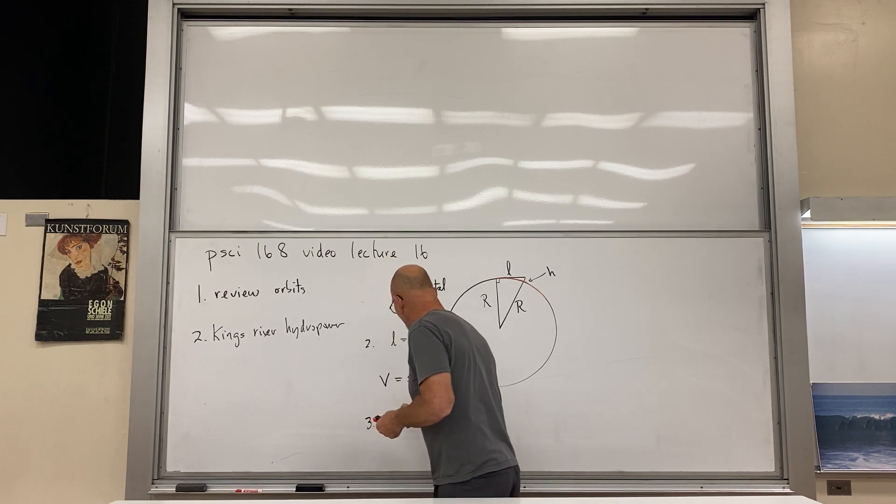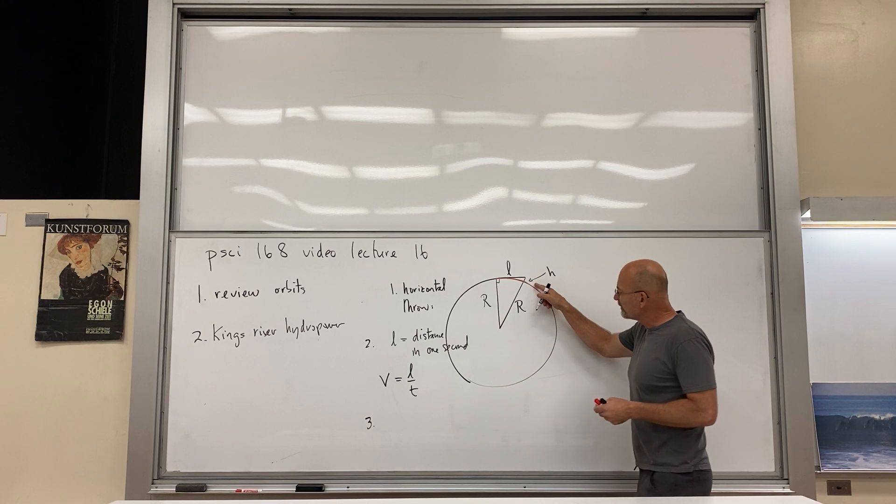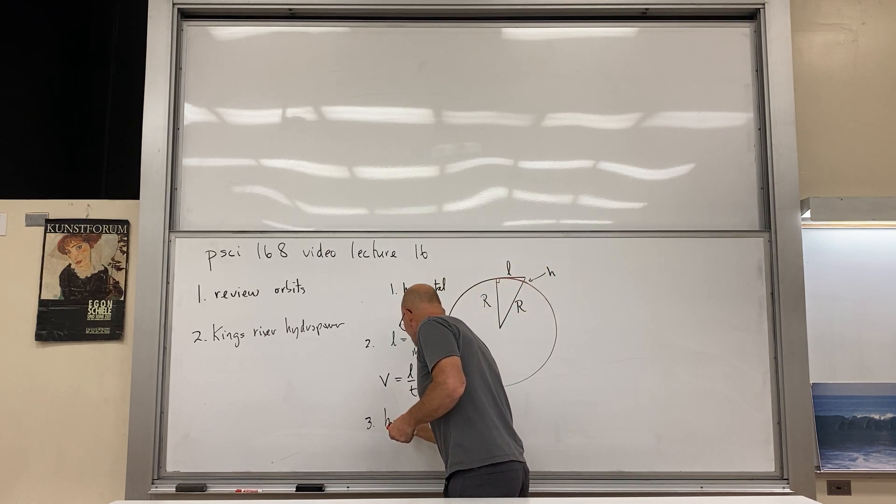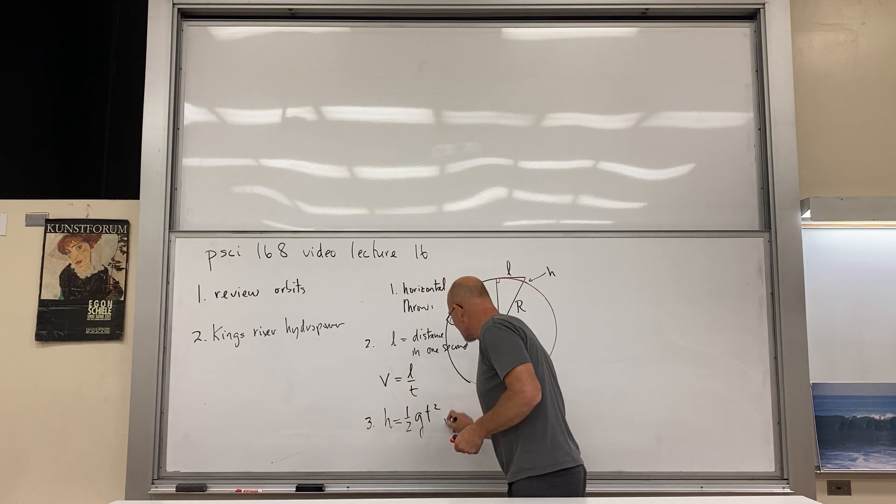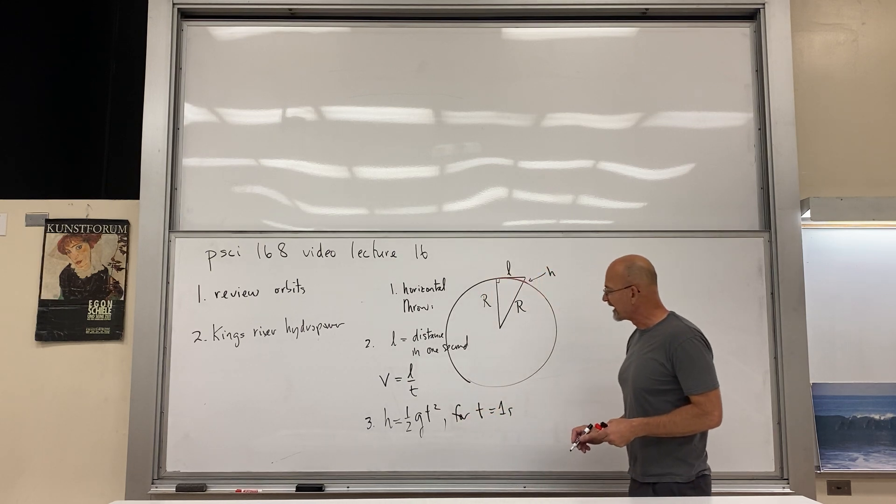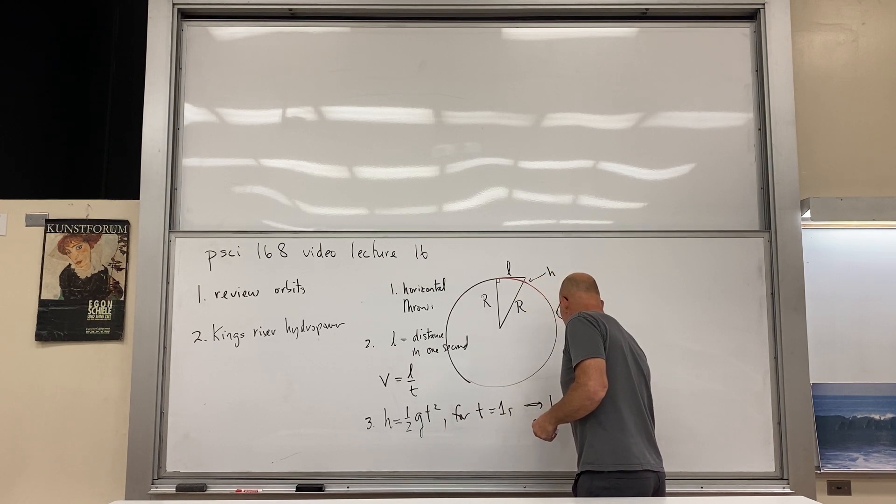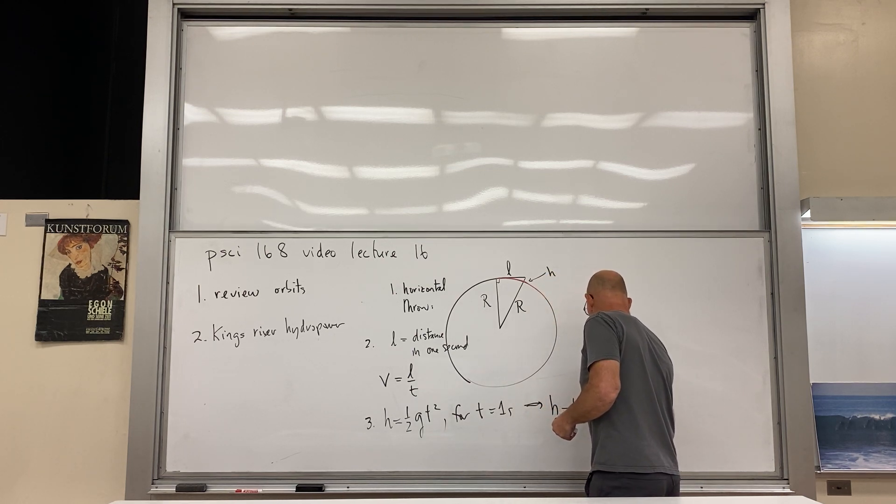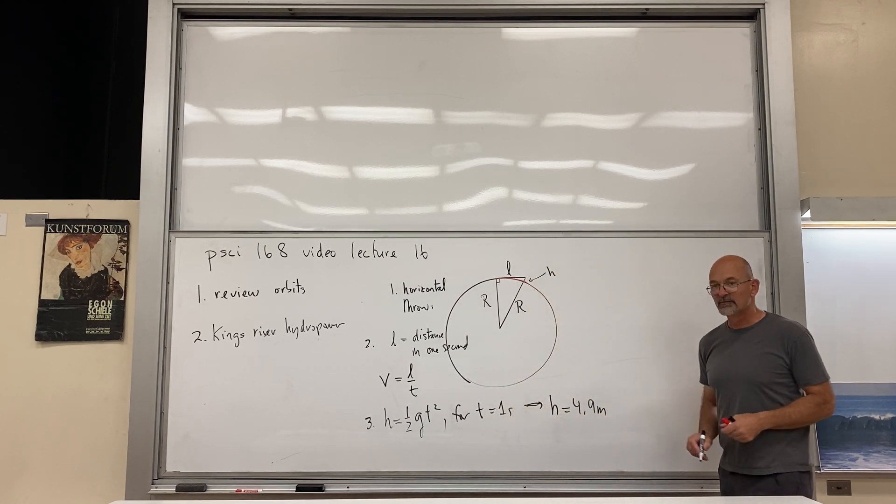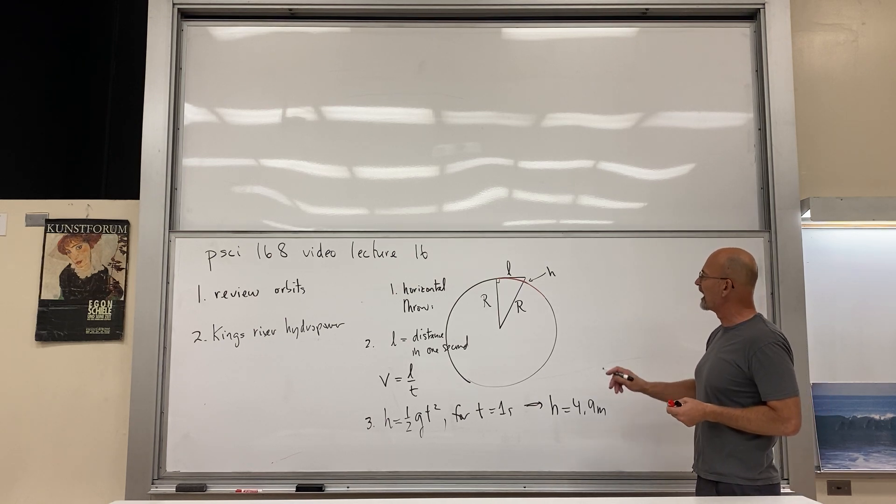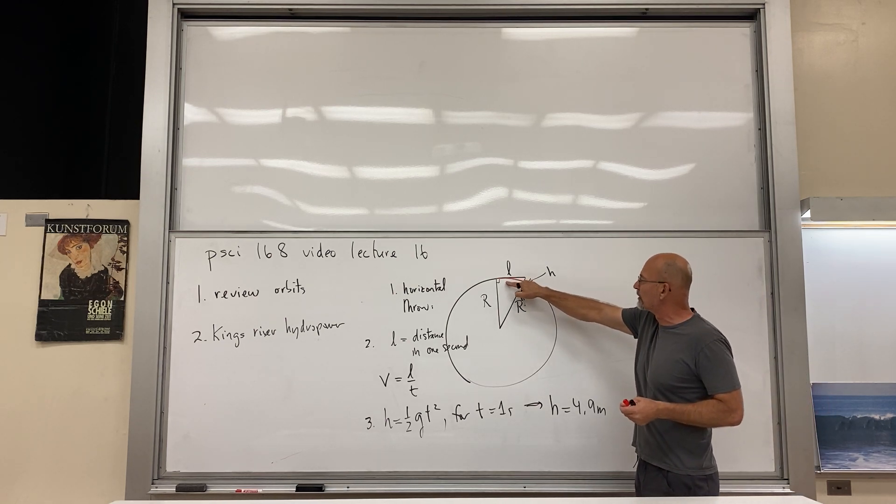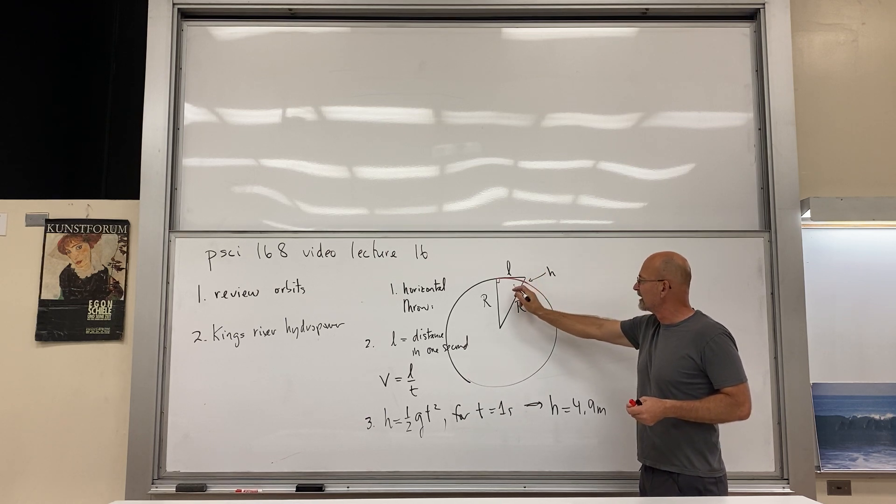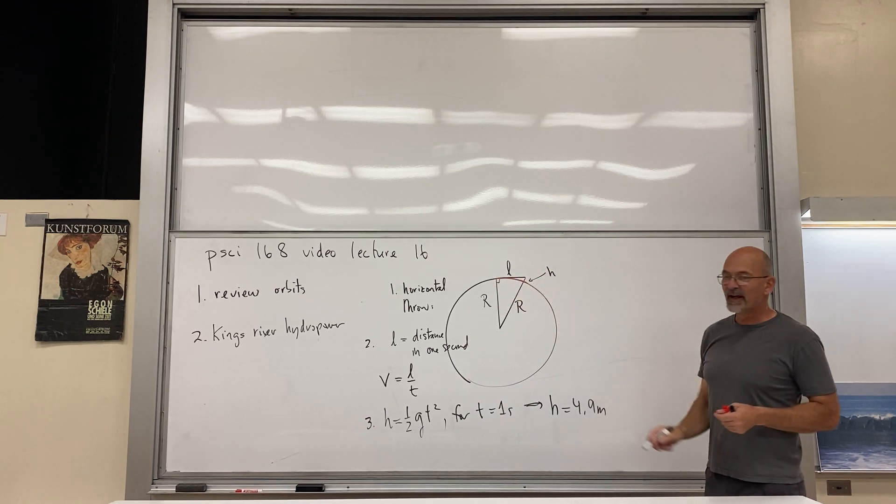So something's moving forward distance in one second, so you would have v equals l over t, where t is equal to one second. The speed that we're looking for v is going to be l over t, where t is equal to one second. Okay, we number these things, and my third point is that there's that little bit of free fall, so h equals one half g t squared, where t equals one second, and that's why h equals 4.9 meters.